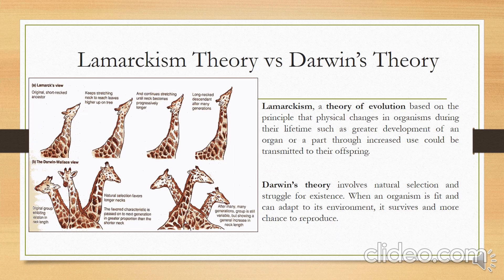Now let us differentiate Lamarckism versus Darwin's theory. Lamarckism is a theory of evolution based on the principle that physical changes in organisms during their lifetime, such as greater development of an organ through increased use, could be transmitted to their offspring. On the other hand, Darwin's theory involves natural selection and struggle for existence — when an organism is fit and can adapt to its environment, it survives and has a greater chance to reproduce.